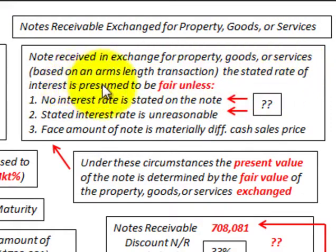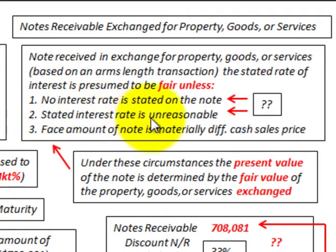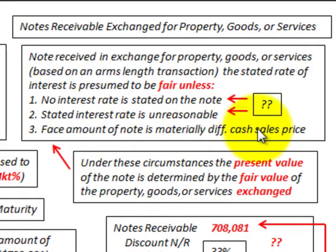The stated rate of interest is presumed to be fair unless: one, no interest rate is stated on the note — in our example we have a zero interest bearing note, so there's no interest rate stated; two, the stated interest rate is unreasonable; or three, the face amount of the note is materially different than the cash sales price. This is where we have to determine what the reasonable interest rate is.